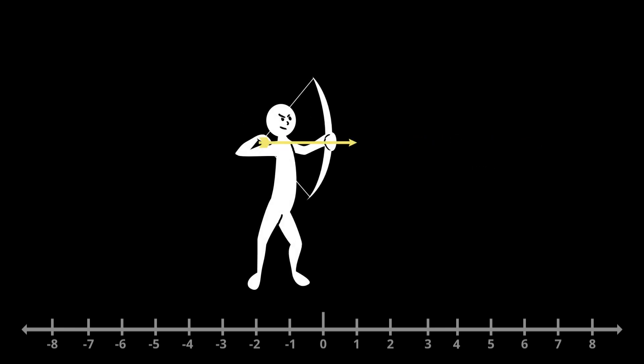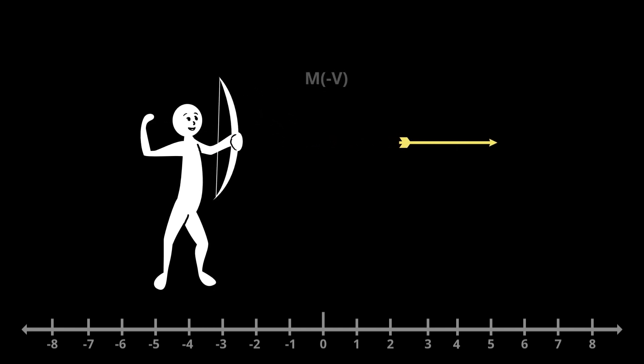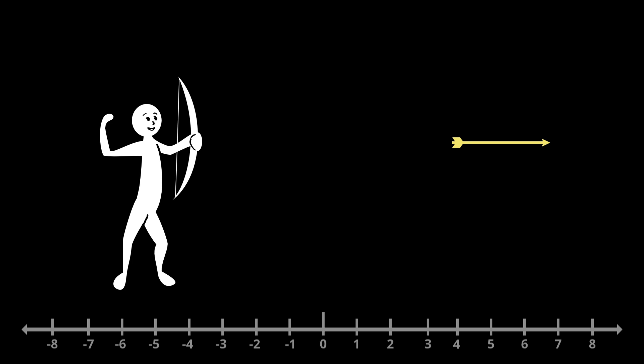But because the system is isolated, the total momentum must stay zero. This means that the archer and bow must move back in space in the minus x direction with a momentum of M times minus V, such that mv plus M times minus V equals zero. The total momentum p_f of the system is just the momentum mv of the arrow plus the momentum of the bow. Thus, p_f equals mv plus M times minus V equals zero equals p_i, and the momentum of the system is conserved.